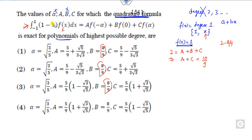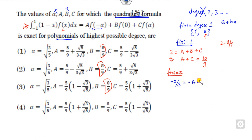Now substitute the second value when f(x) = x. What will happen? This is nothing but x minus x squared. The integration of x is 0, and x squared gives minus 2/3. Then f of minus alpha gives minus A times alpha, f of 0 is 0, and C times alpha is here. Now you have two equations and you can easily equate them.